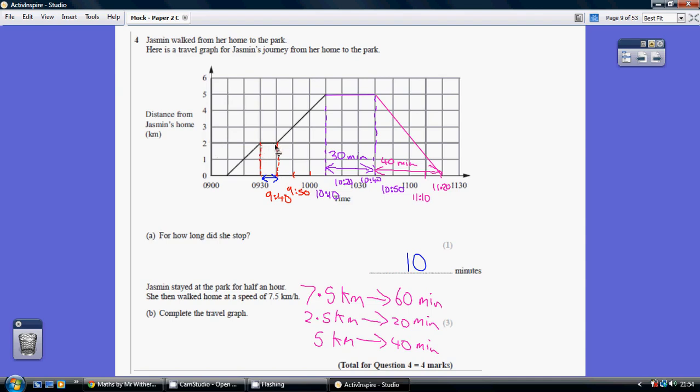So, how long is this one square? We have to become familiar with the scale. Notice how 9:30 to 10 is over three squares. That's 30 minutes, so each square must be 10 minutes. We're talking about one square while she's stopped, so 10 minutes.